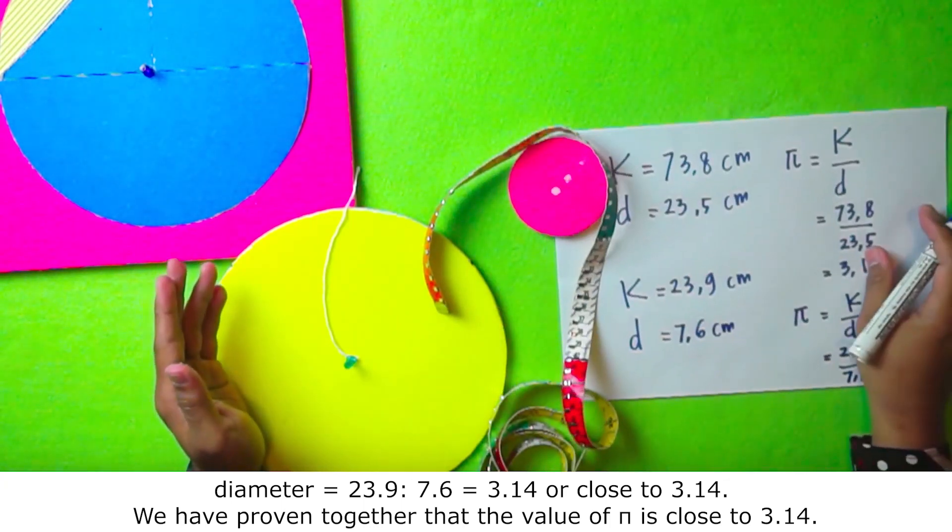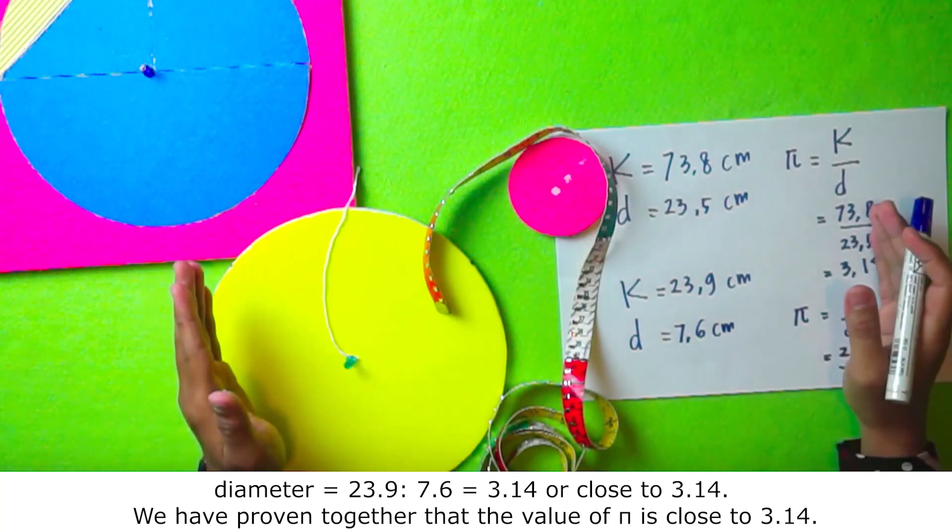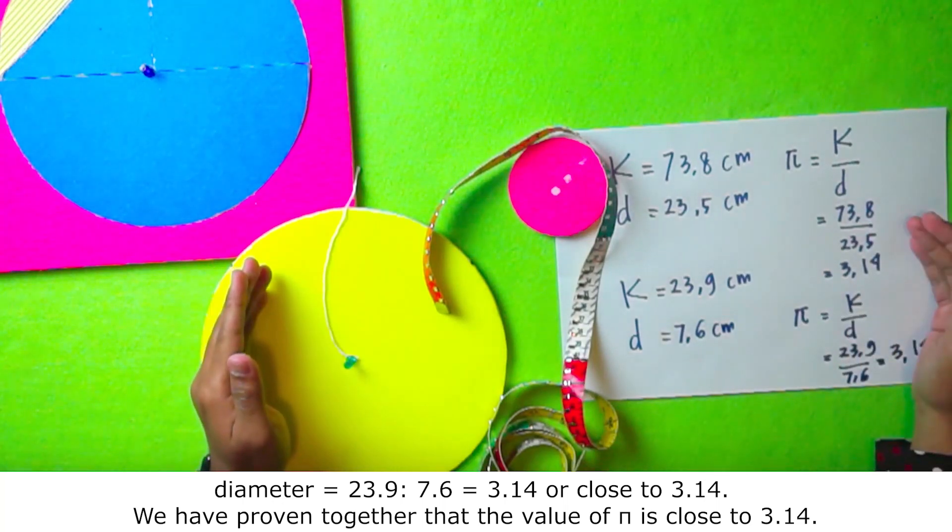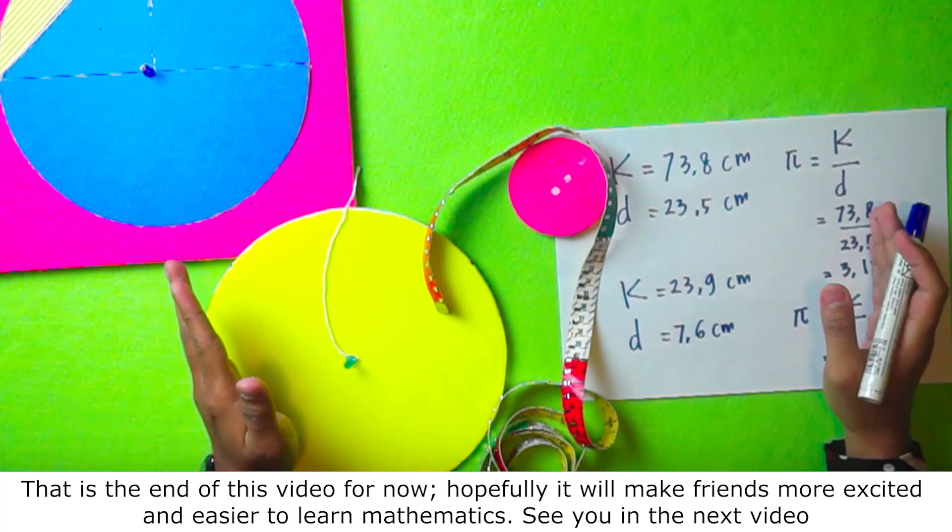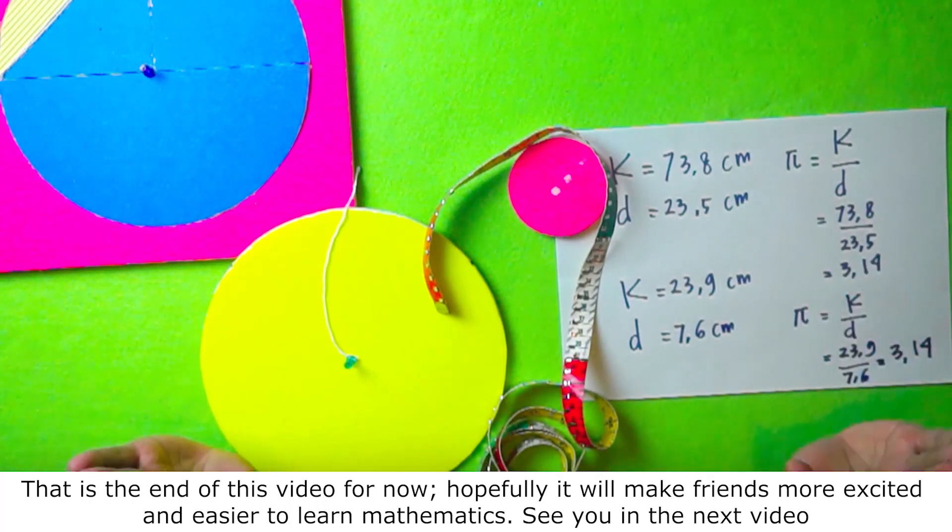We have proven together that the value of pi is close to 3.14. Okay, that's the end of this video for now. Hopefully, it will make friends more excited and easier to learn mathematics. See you in the next video.